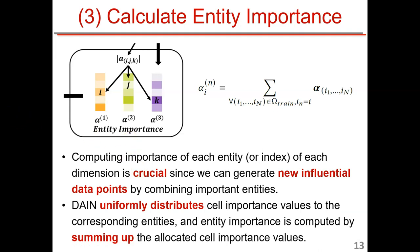To compute entity importance, we use a simple aggregation technique. We distribute each cell's importance uniformly to its corresponding entities — alpha_i, alpha_j, alpha_k. Each entity then sums up all the allocated importance values using the aggregation equation. This gives us the single entity importance score per entity.